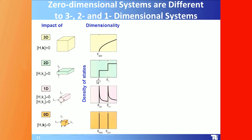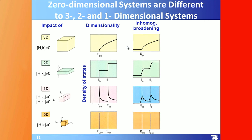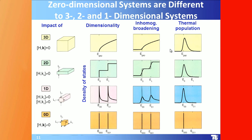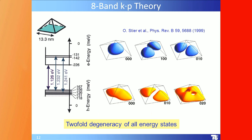Naively, the density of states goes as a square root, step function, square root inverse, and delta function for 3D, 2D, 1D, and 0D. In reality there is always broadening — for example, interface broadening in quantum wells smears out the step function. But when you populate these density-of-state functions with a given number of carriers, all higher-dimensional systems start to look similar, whereas a quantum dot remains a delta function with only Lorentzian lifetime broadening.